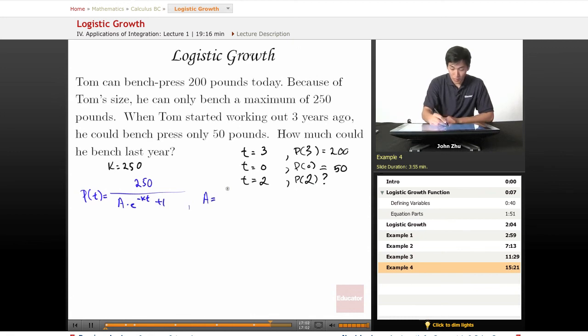A here equals 250 minus 50, which was what he started with, initial condition, over 50. And that equals 4.